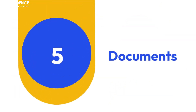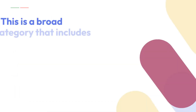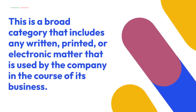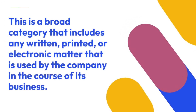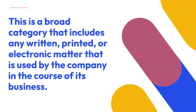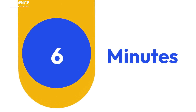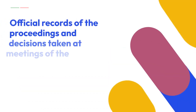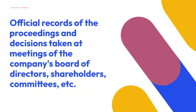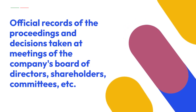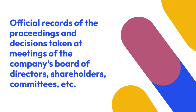Key Feature 5: Documents. This is a broad category that includes any written, printed, or electronic matter used by the company in the course of its business. Key Feature 6: Minutes. These are official records of the proceedings and decisions taken at meetings of the company's board of directors, shareholders, committees, etc.